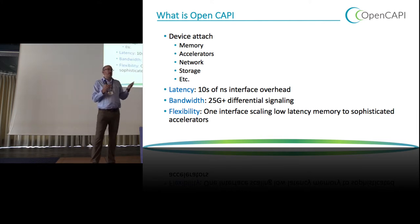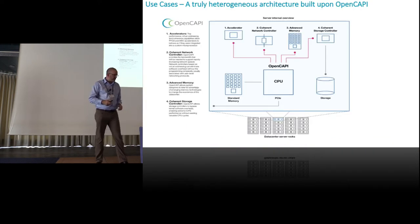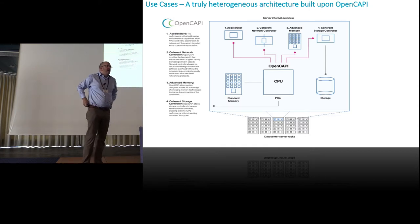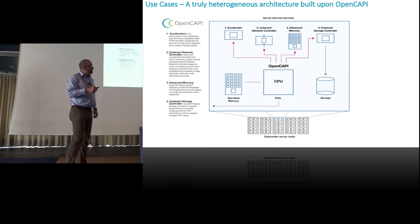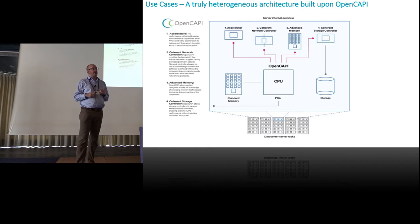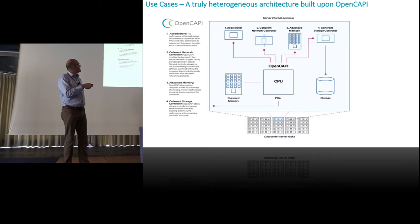In terms of latency, we're talking tens of nanoseconds. For attaching DRAM, we're looking at around five nanoseconds due to special properties of DRAM that let us get even lower latency. For bandwidth, we're starting at 25 Gbps differential signaling with a view towards 32 and 56 Gbps going forward. And there's flexibility — one interface to rule them all, everything behind this one interface.